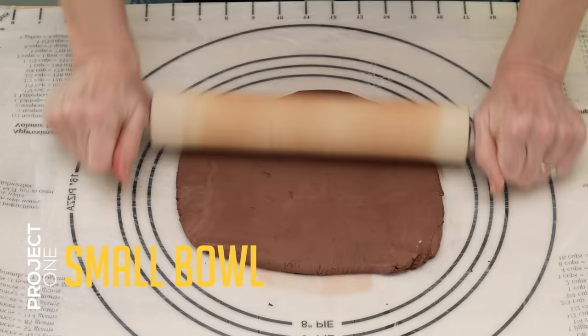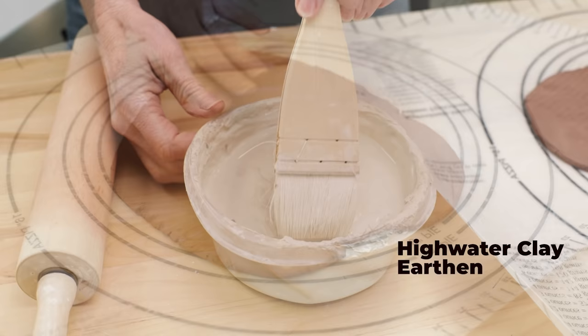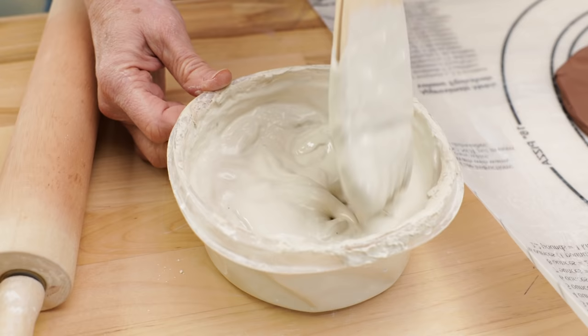I started by rolling out a clay slab thicker than a quarter inch that would be a contrasting color with my white porcelain. Here is some slip that I made by slaking down my white porcelain clay scraps with water to a thin yogurt consistency. If you want more detailed instructions for making slip, check out the link above.